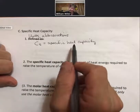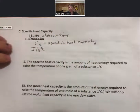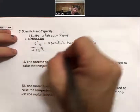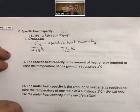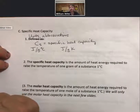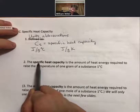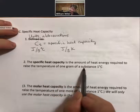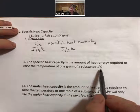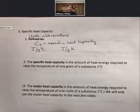We're going to go with specific heat capacity, and you'll see two sets of units for this: joules per gram degrees Celsius, and also joules per gram Kelvin. The specific heat capacity is the amount of heat energy required to raise the temperature of one gram of a substance one degree Celsius. Let's talk about how these two sets of units relate to Kelvin.